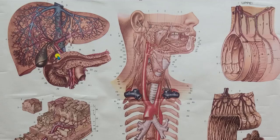The common bile duct comes down and then goes behind the pancreas, where it merges with the main pancreatic duct — shown in white — that runs through the length of the pancreas. Those two have a shared connection to the duodenum called the hepatopancreatic sphincter, or sphincter of Oddi. The accessory pancreatic duct is a branch off the main pancreatic duct with its own separate connection to the duodenum. Inside the duodenum, we can see the plicae circularis — circular folds that increase surface area inside the small intestine.